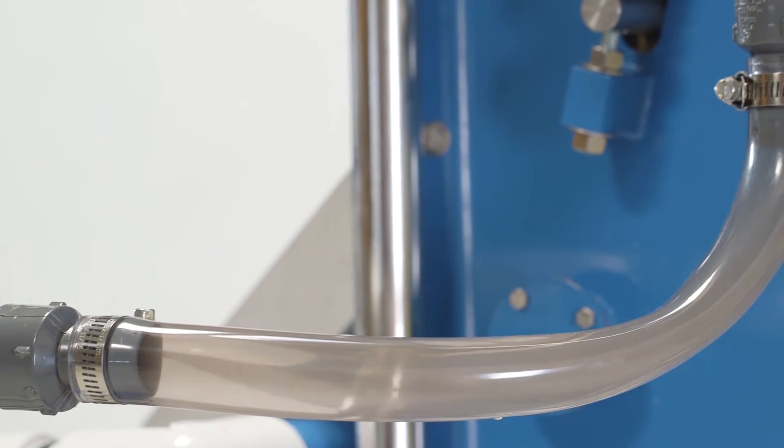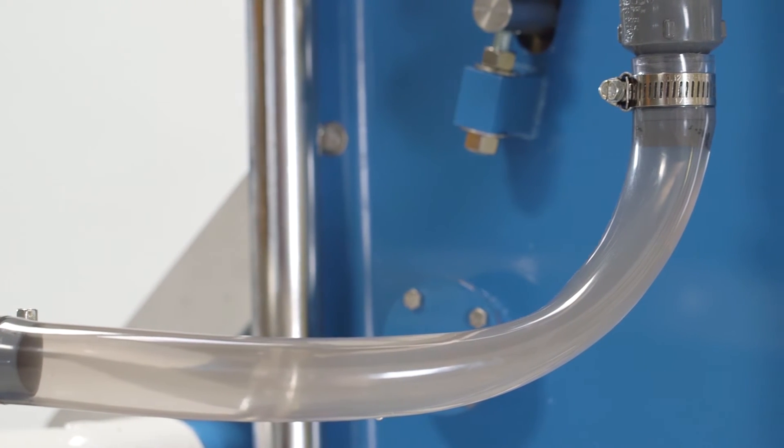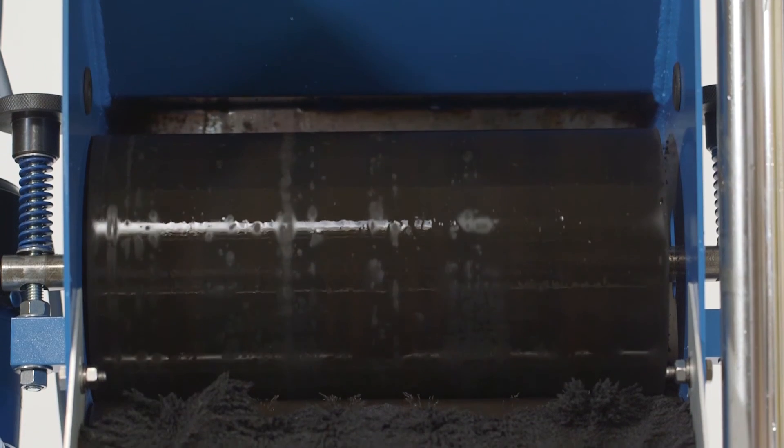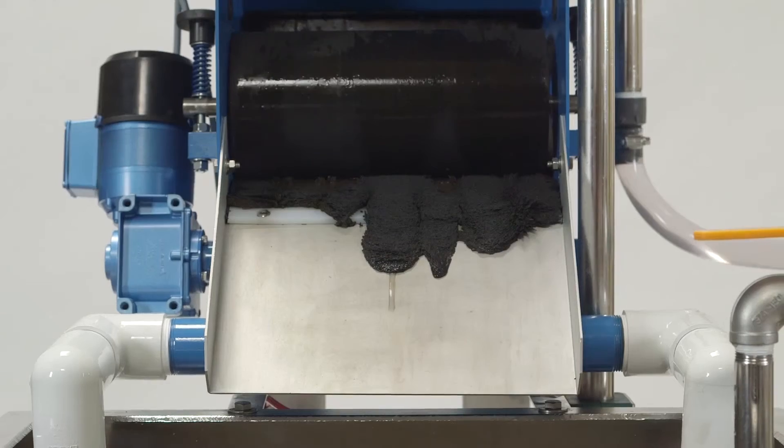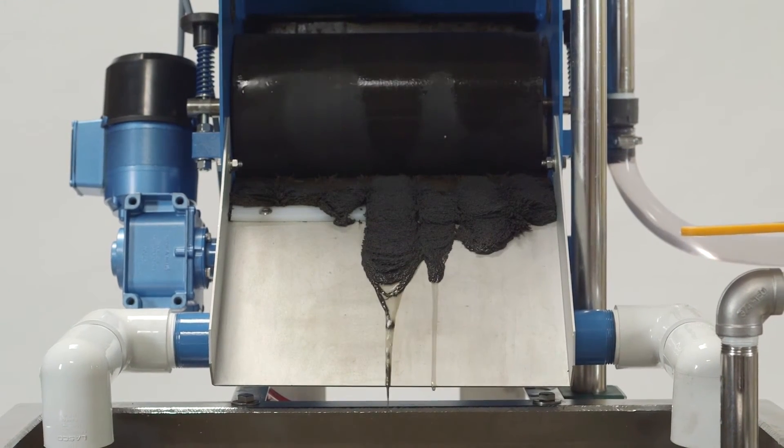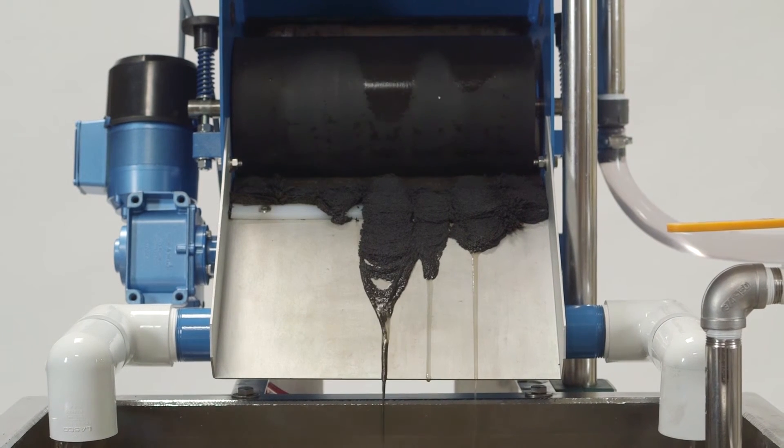The solids-laden fluid that was discharged from the magnetic separator through the purge valve is then directed to the V-drum, where the solids are removed from the process, and almost 100% of the fluid is returned.